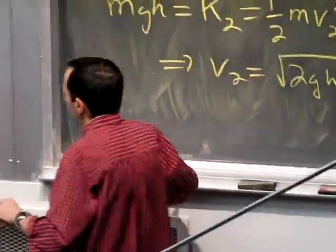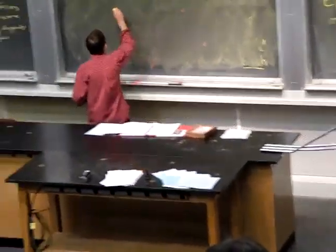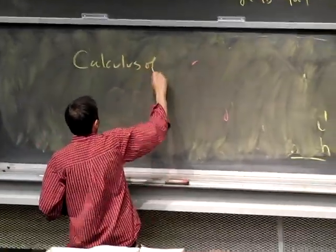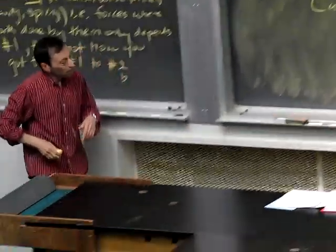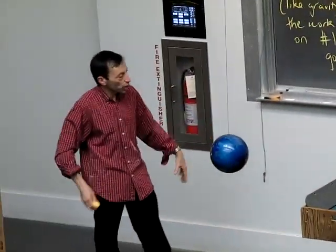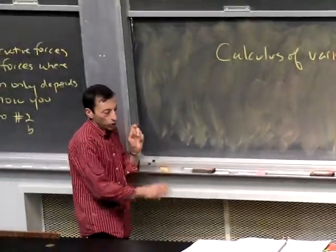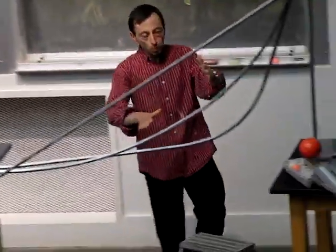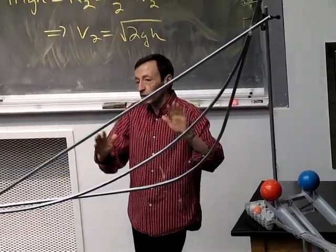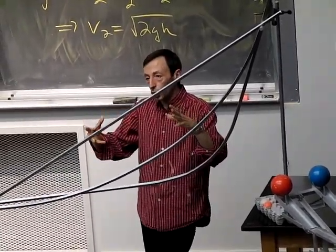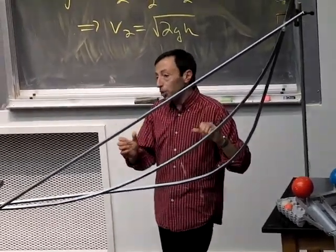What you can do to deal with the hairy math is use a bit of math called the calculus of variations — which you'd actually learn more in economics than physics, though we teach it for physics too. You can ask: which path, how should I build this track to get the ball to the bottom fastest? It's an optimization problem.